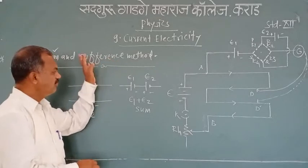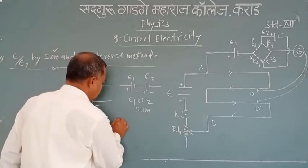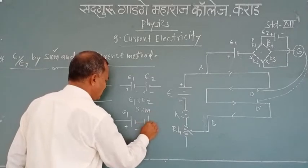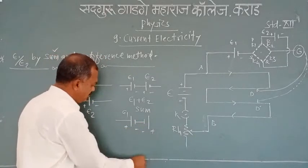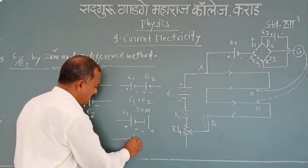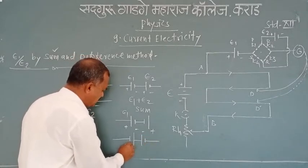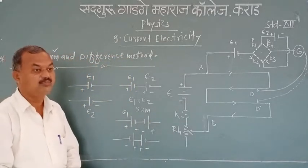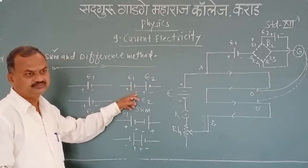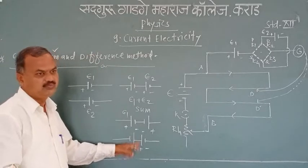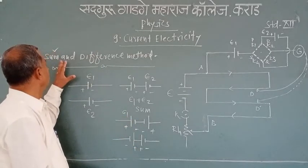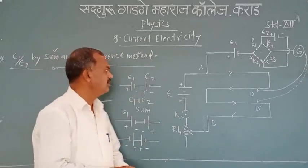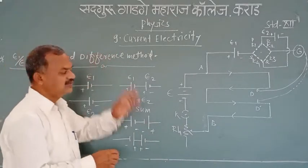Similarly, in the difference method, connect the negative plate of the first cell to the negative plate of the second, or the positive of the first to the positive of the second. Then the two cells are said to be connected in the difference or opposed method. The sum method is also called the assist method, and the difference method is also called the opposed method. Using both combinations, we can compare the EMFs of the two given cells.